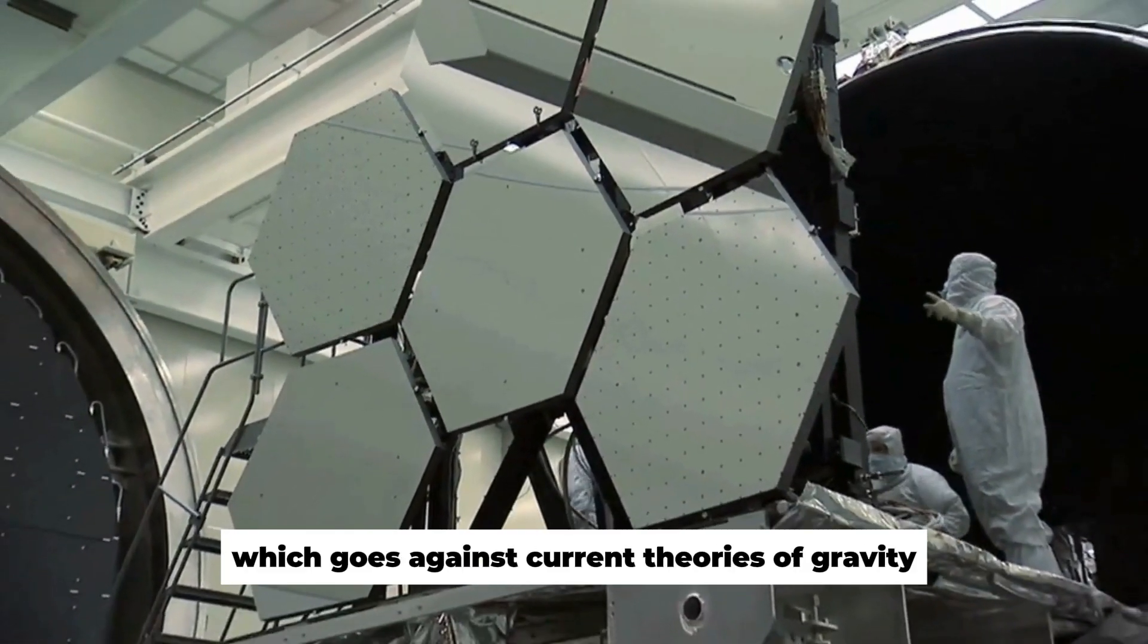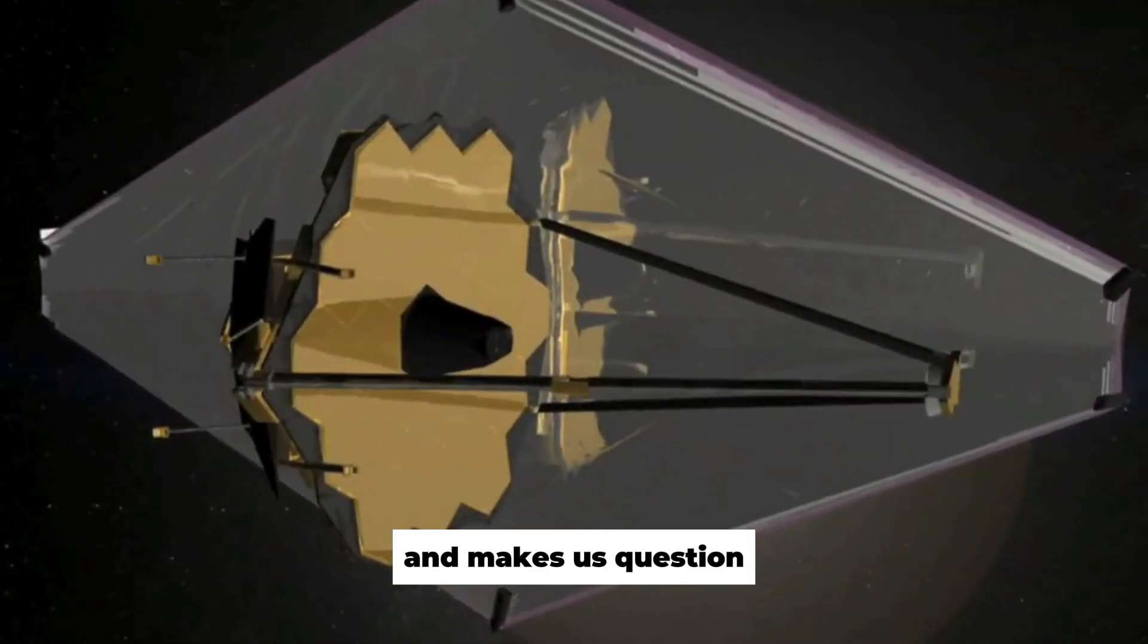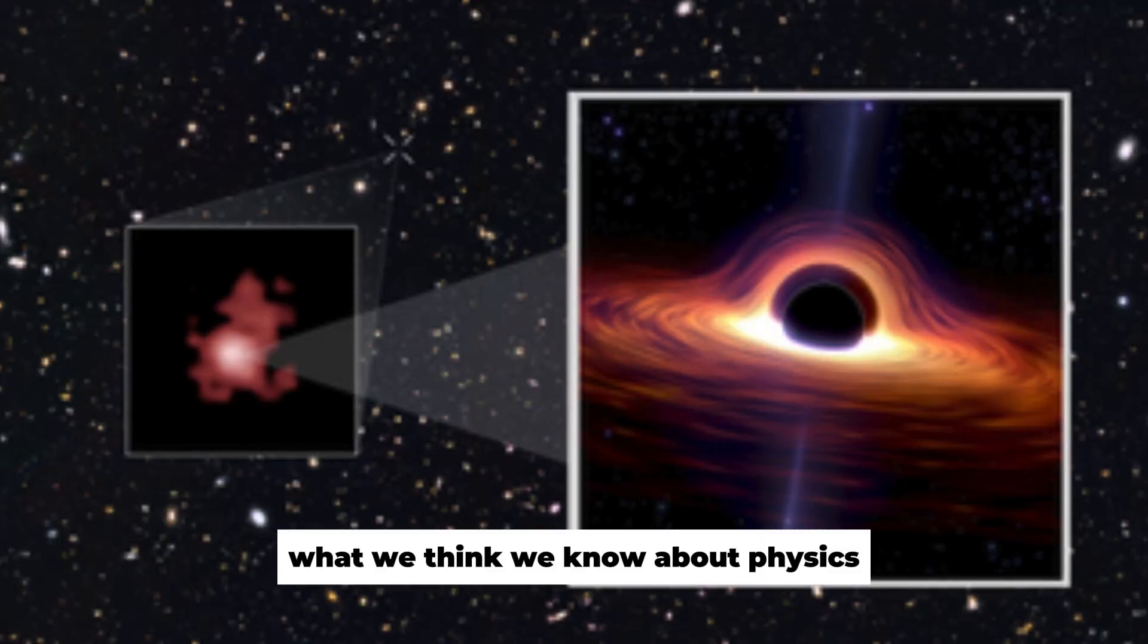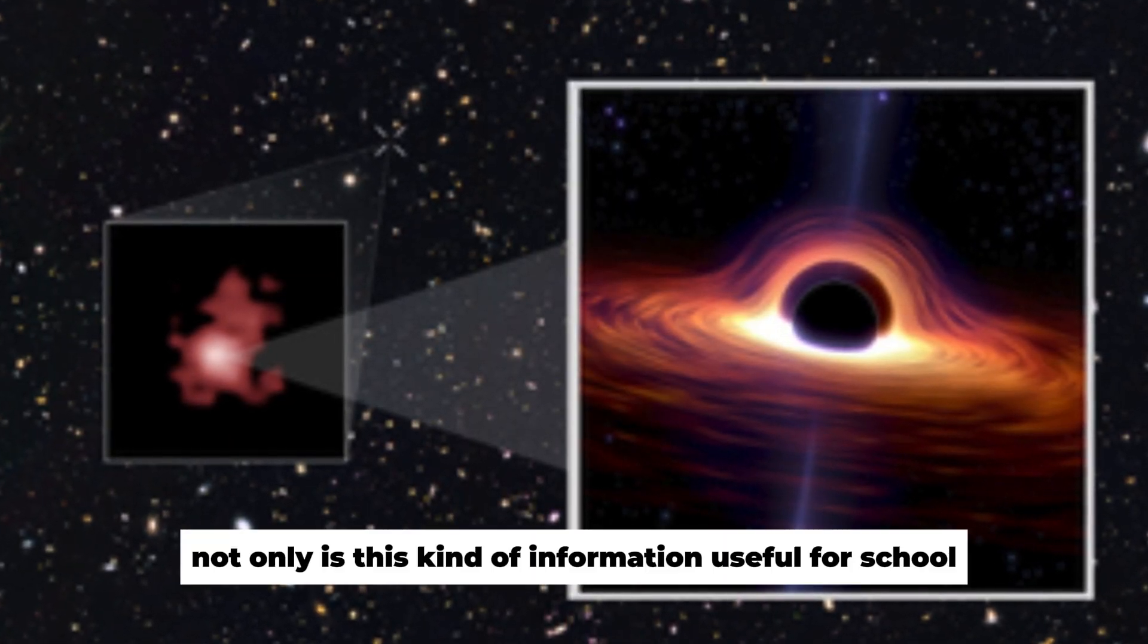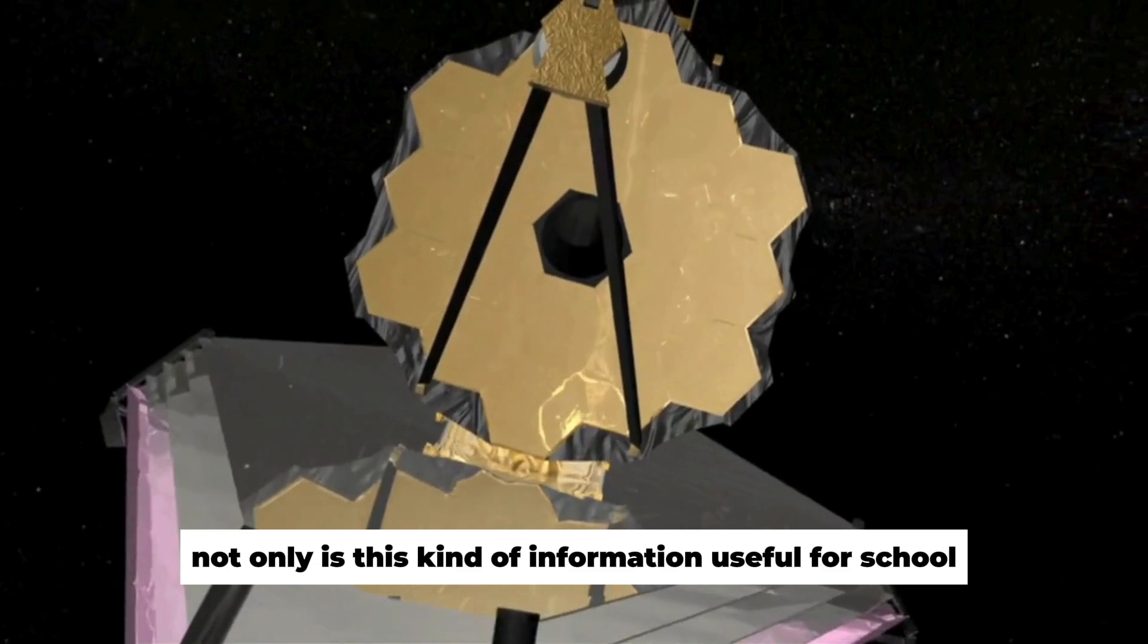Imagine that we find an exoplanet whose path isn't smooth, which goes against current theories of gravity, and makes us question what we think we know about physics and how things move in space. Not only is this kind of information useful for school, but it will also have long-term effects on technology and space research.